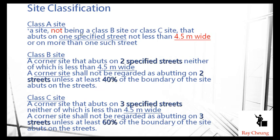There are a few types of site classifications. The first one is Class A. Normally, Class A is only one specific street, not less than 4.5 meters wide.